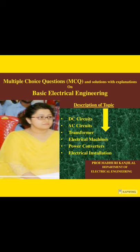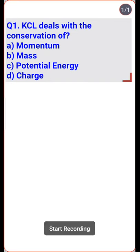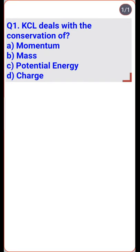KCL states that the amount of charge entering a junction is equal to the amount of charge leaving. So it is the conservation of charge — option D is the right one.